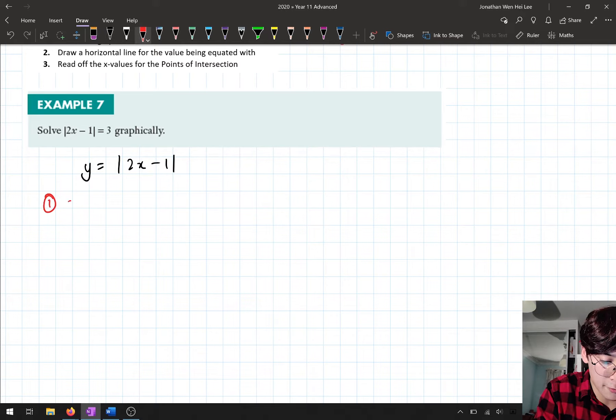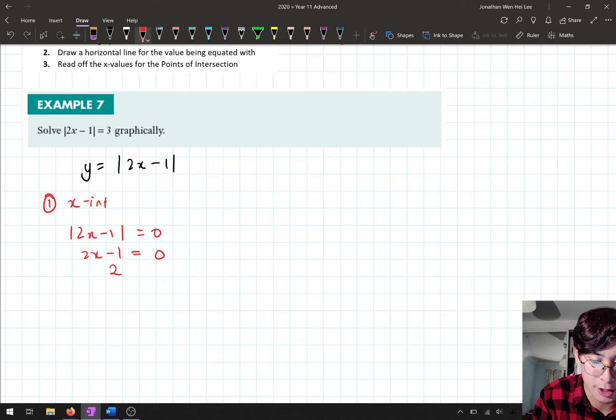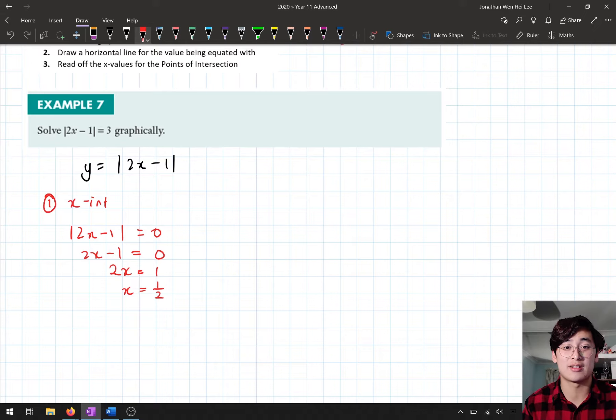So step one, I want to find the x-intercept, so I sub y = 0. So here, |2x - 1| = 0. So 2x - 1 = 0. 2x = 1, and x = 1/2. So we have an x-intercept at 1/2, and that's where the vertex point is going to be.